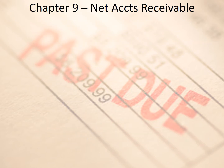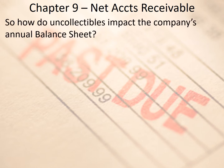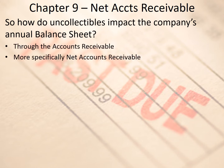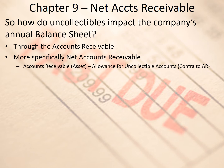Let's look at the balance sheet specifically and at net accounts receivable. When we're talking about net accounts receivable, we think about how uncollectibles really impact the annual balance sheet. It's through accounts receivable — more specifically through a calculation called net accounts receivable, which is accounts receivable (the asset) minus the allowance for uncollectible accounts (the contra to accounts receivable). That's the calculation. It's very simple.